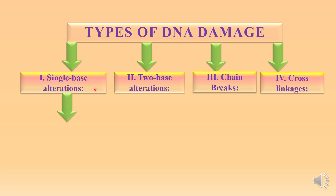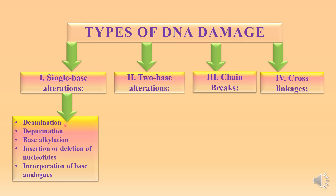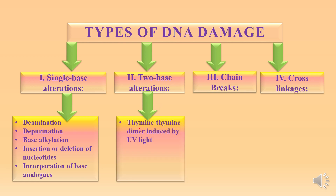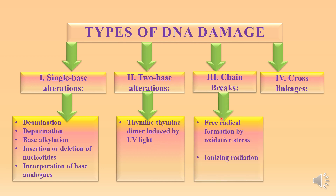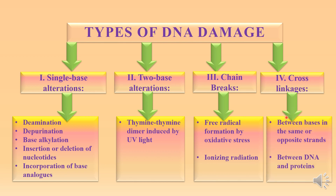Single base alterations include alterations due to deamination, depurination, base alkylation, insertion or deletion of nucleotides, and incorporation of base analogues. Two base alterations include thymine-thymine dimer formation induced by UV light. Chain breaks are caused by free radical formation due to oxidative stress and ionizing radiations. Cross linkages are formed between bases in the same or opposite strands, and may also be formed between DNA and proteins, such as the histone proteins.